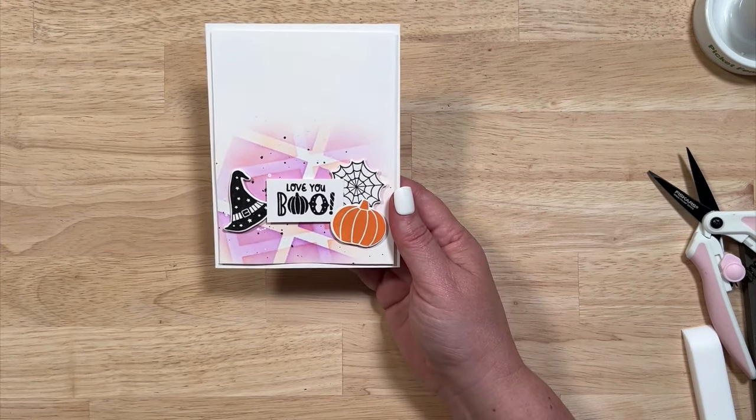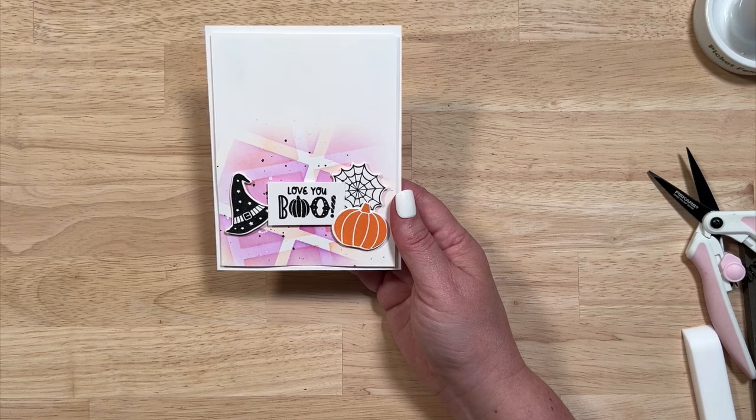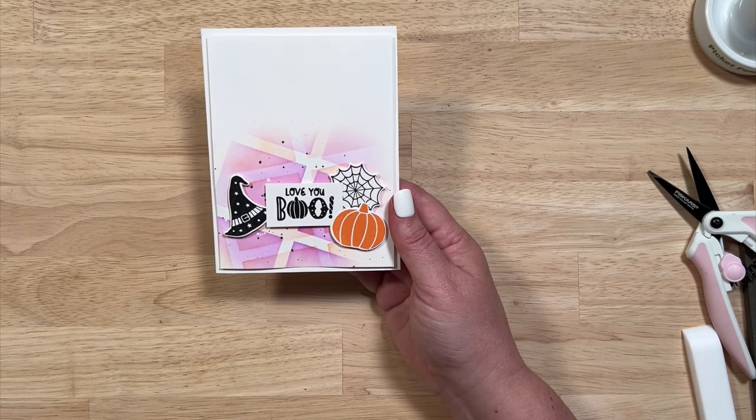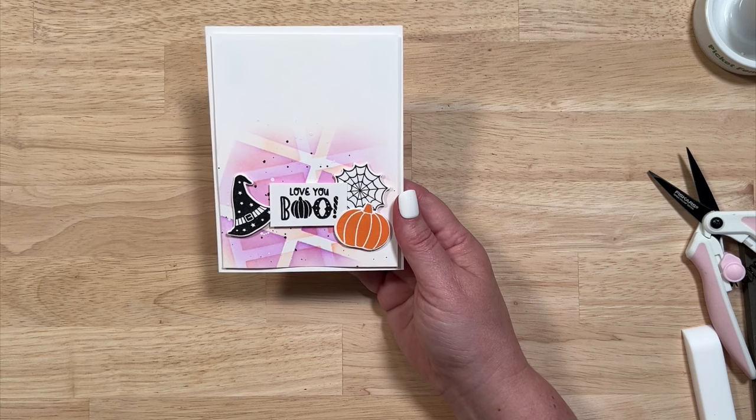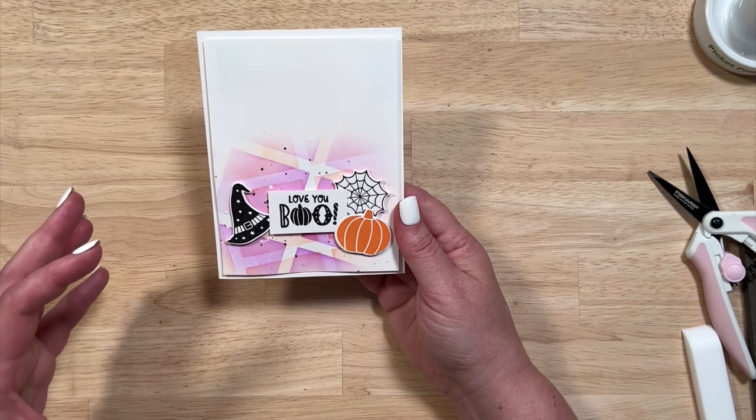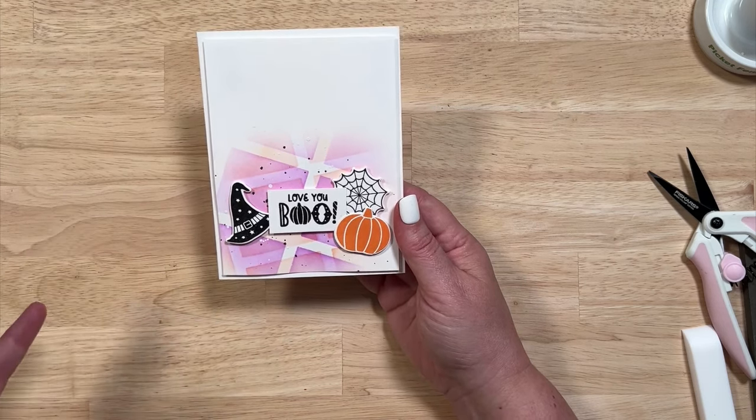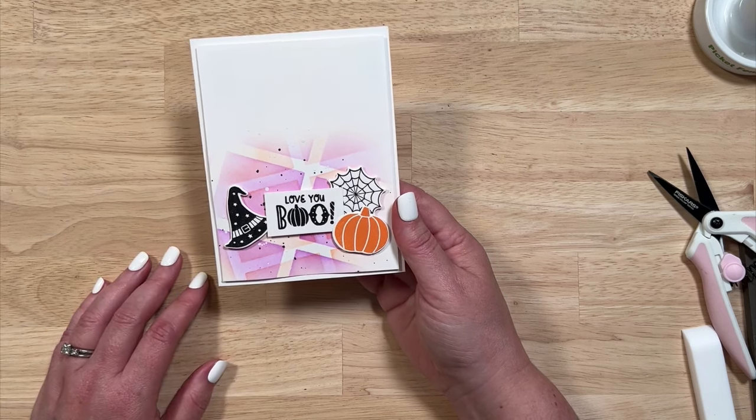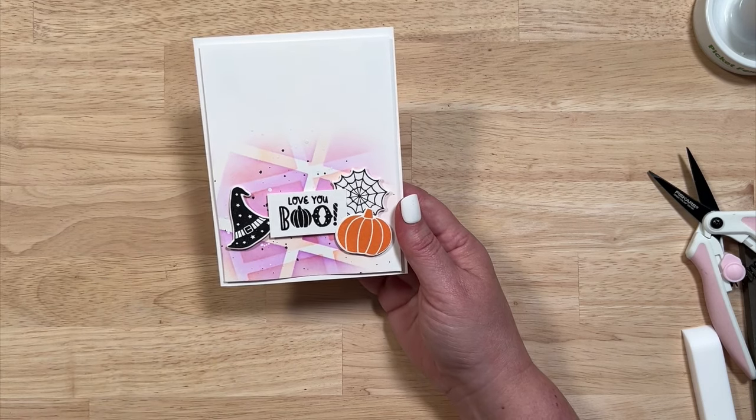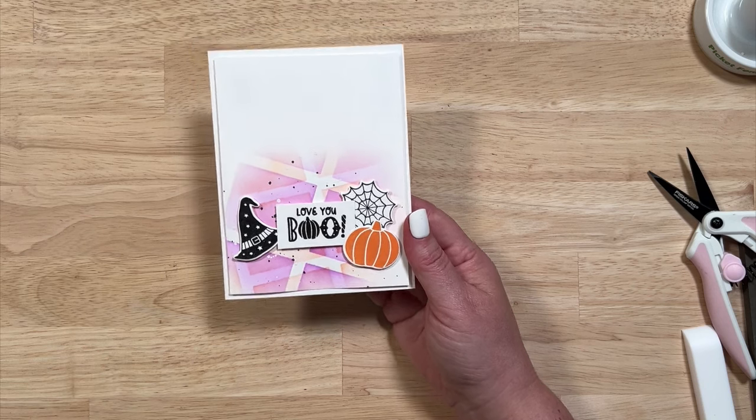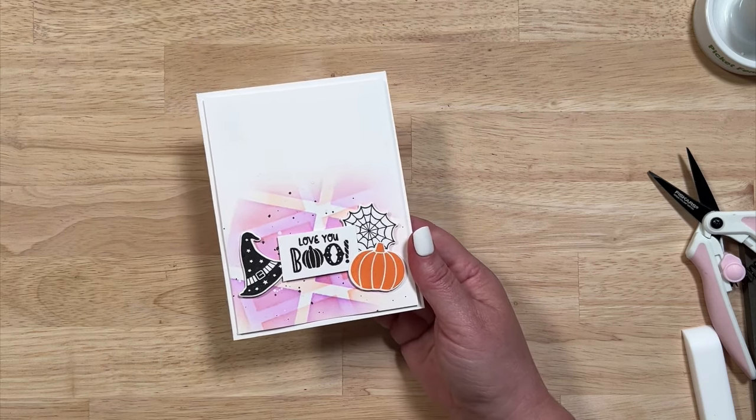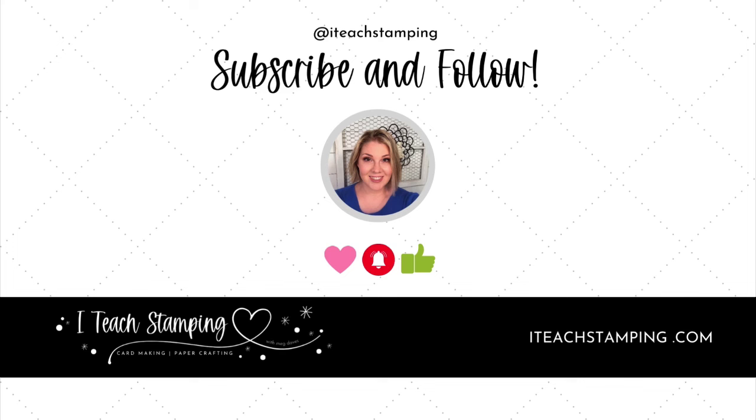And then I grabbed some of my favorite images from that Boo Box. And when you're watching this, if that Boo Box is still around, I'll have a link in my description below. Make sure to go grab it while you still can. But if not, try this with other supplies that you have. There's so many things you can do with this idea. So if you like this video, make sure to like and follow I Teach Stamping. Again, I'm Meg from I Teach Stamping. Thanks for watching, and I'll see you in the next video. Have a great day.